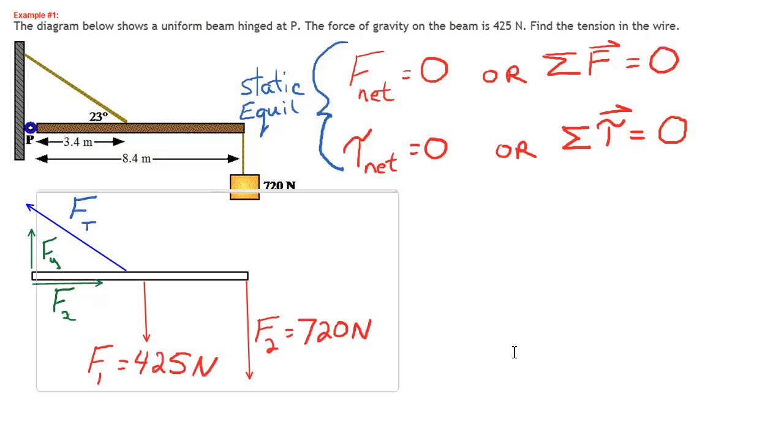So there's our simplified diagram. I've chosen my pivot point at location P at the end. That way the torques generated by Fy and Fx are zero, because the distance to the pivot point is zero. And I've effectively eliminated two unknowns from my rotational equilibrium condition. So I choose the pivot point to eliminate unknowns.